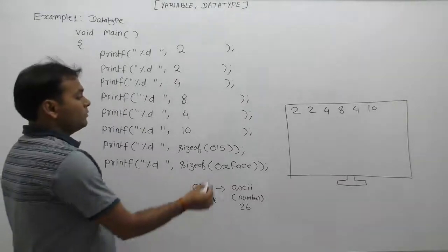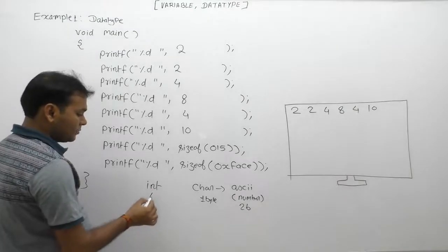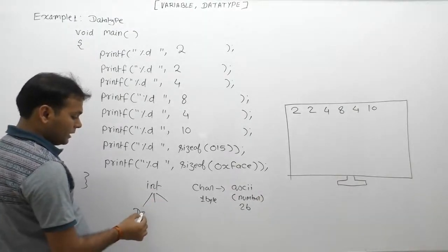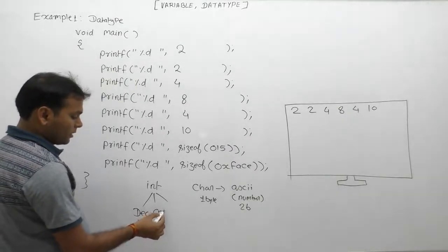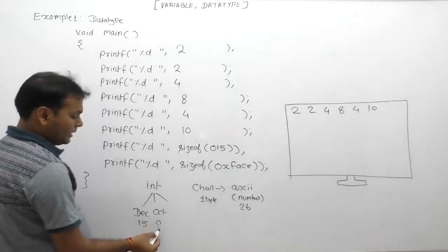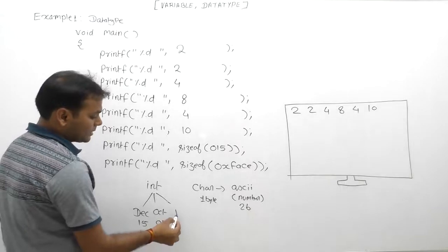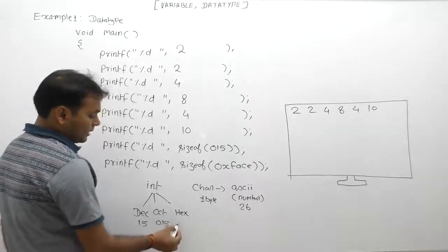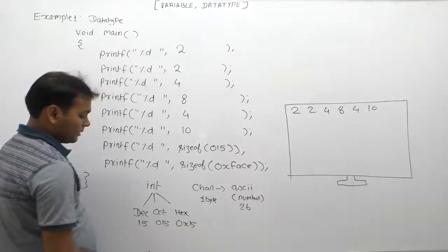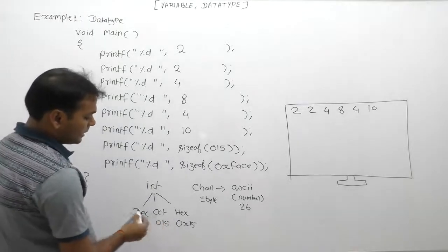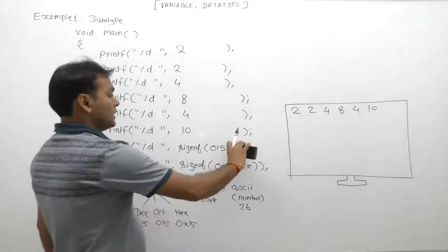For integer literals, there are three types: decimal number system, octal number system where any integer literal starts with zero, and hexadecimal number system where any integer literal starts with 0x. Decimal, octal, or hexadecimal—all three types are integers, therefore the size is again two bytes according to integers. The displayed message is 2.